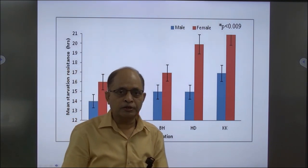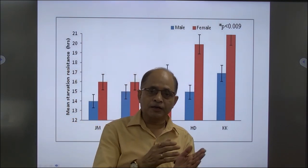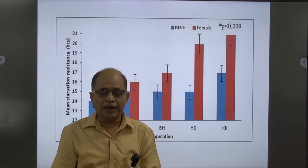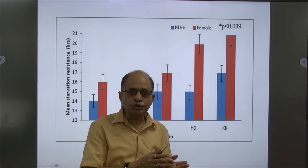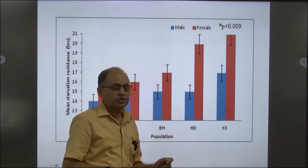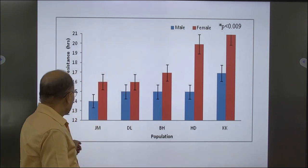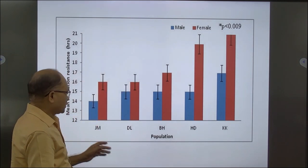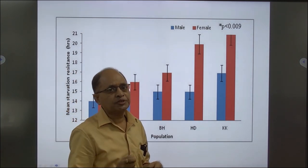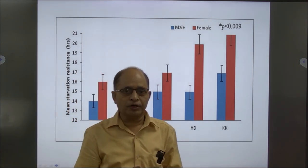By selection experiments with the help of inversions and the mutants we have on the second chromosomes, we can go further to find, localize, or associate longevity aspects. Here I am showing just a few glimpses of my work.